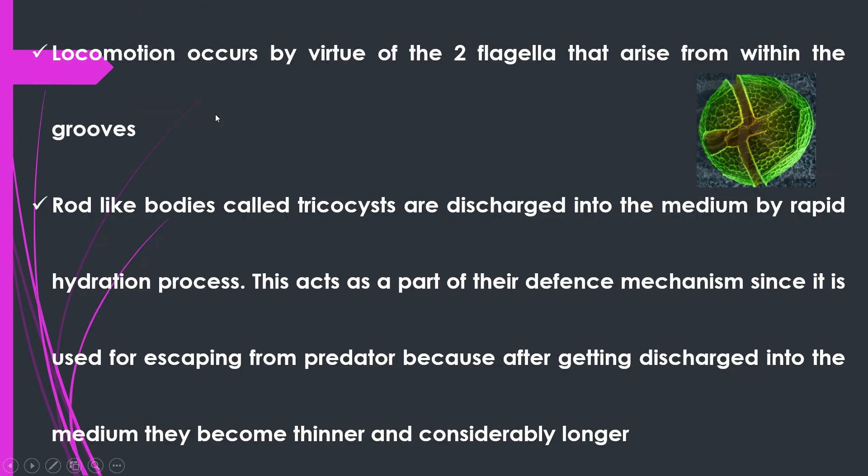Rod-like bodies called trichocysts are discharged into the medium by a rapid hydration process. This acts as part of their defense mechanism, used for escaping from predators, because after getting discharged into the medium they become thinner and considerably longer. This is a very important defense mechanism by which dinoflagellates can protect themselves from various predating organisms in the marine environment.